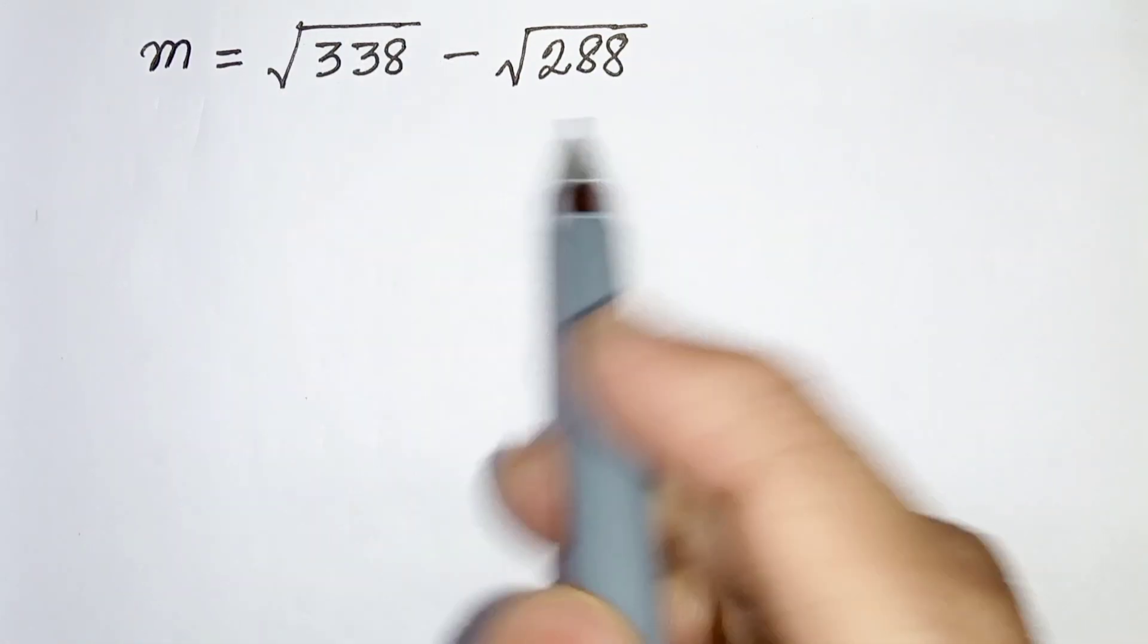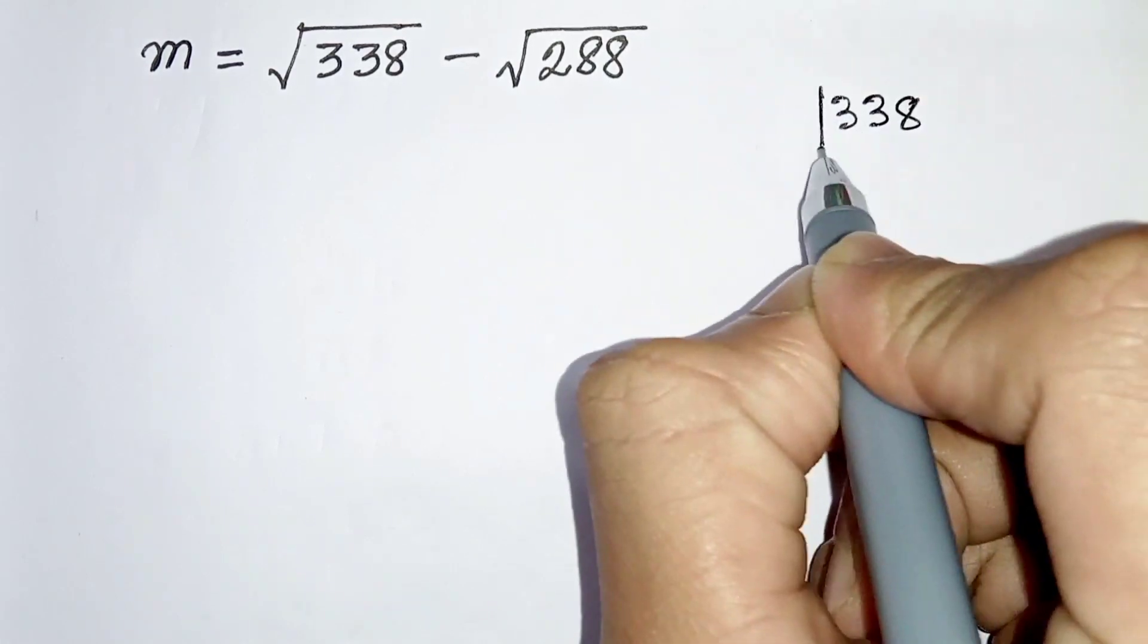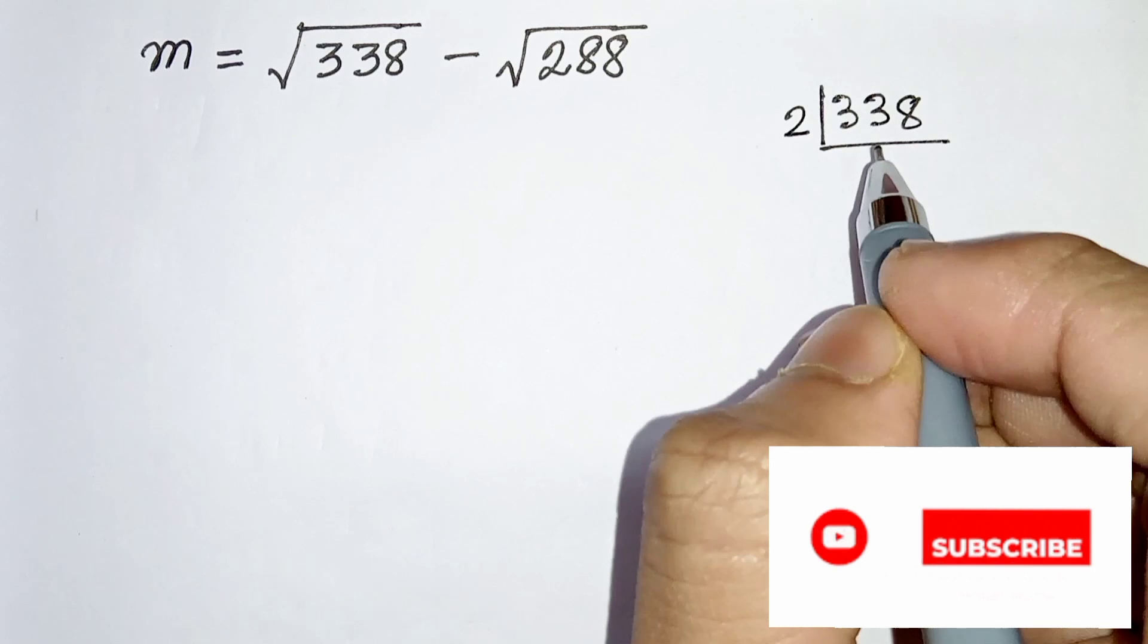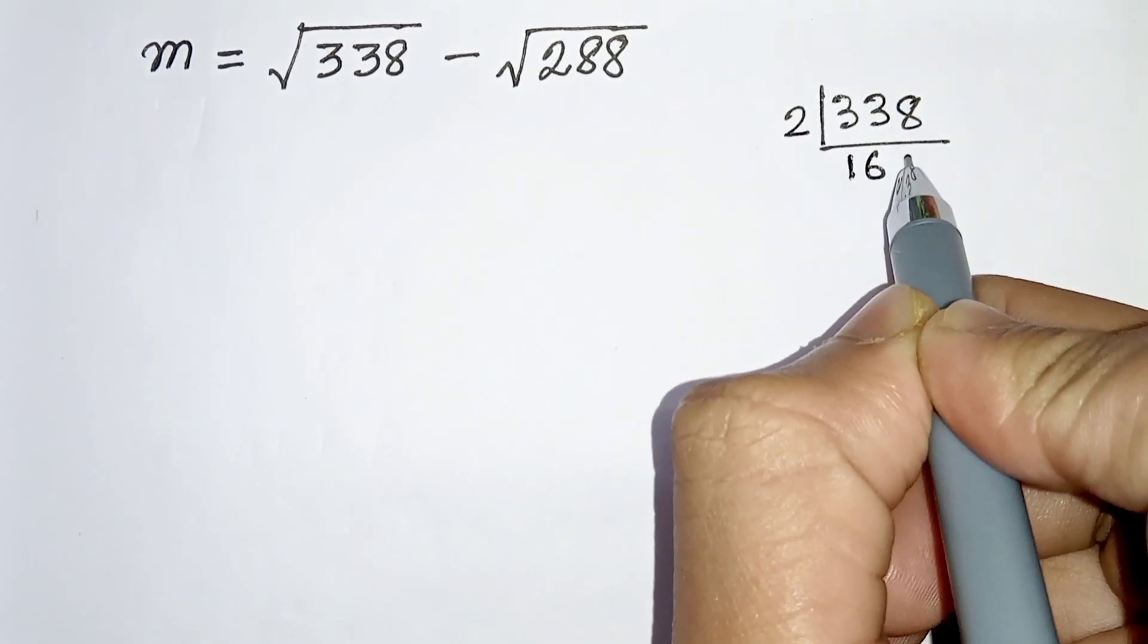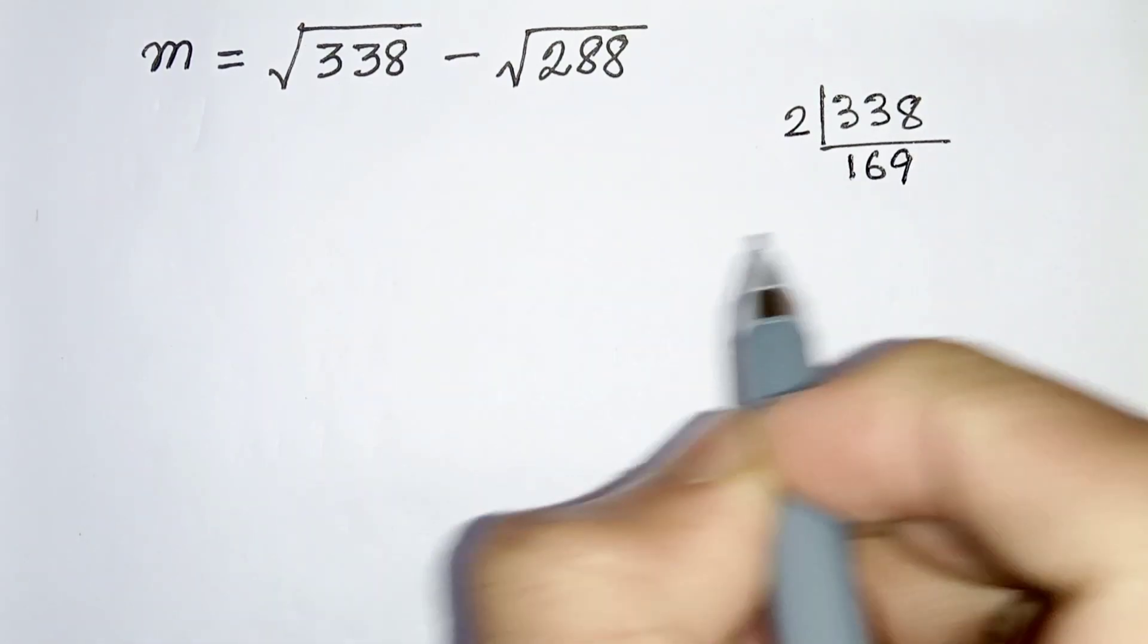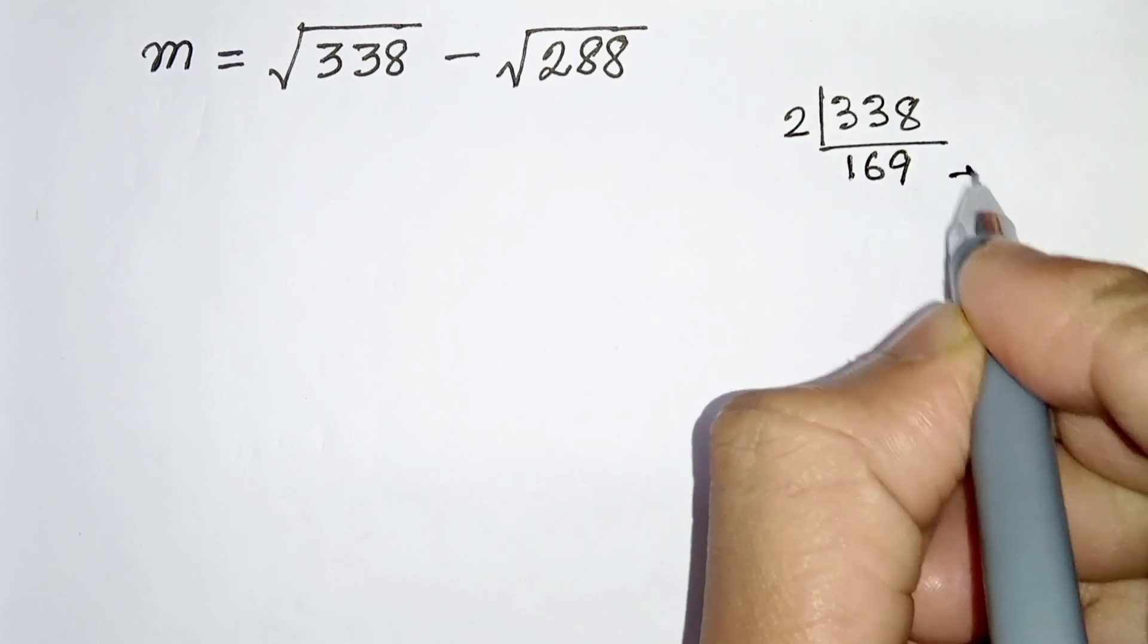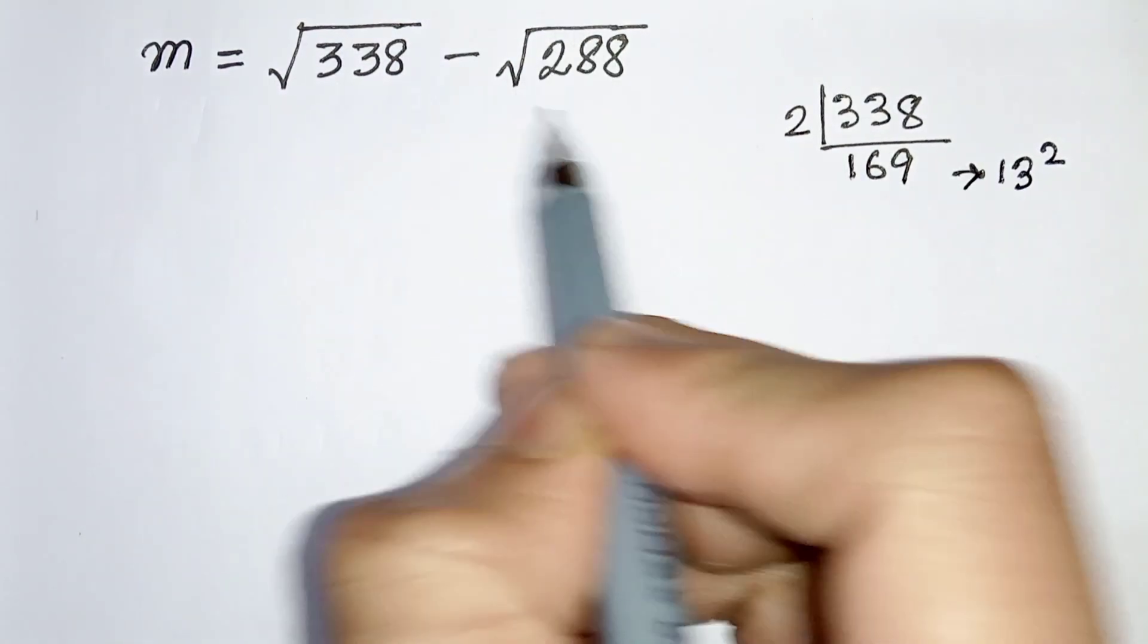So let's factorize this first. 338, if you find the factor we will get 169, and we know that 169 can be represented as a perfect square which is 13 squared. Let's find the factor of 288.